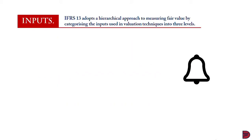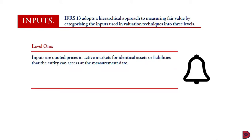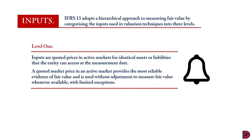When we come to inputs, IFRS 13 adopts a hierarchical approach to measuring fair value by categorizing the inputs used in valuation techniques into three levels. Level one: inputs that are unadjusted quoted prices in active markets for items identical to the asset or liability being measured. If there is a quoted price in an active market, an entity uses that price without any adjustment. An example of this would be prices quoted on the stock exchange. These inputs are quoted in an active market and require no adjustment in pricing the asset or liability.